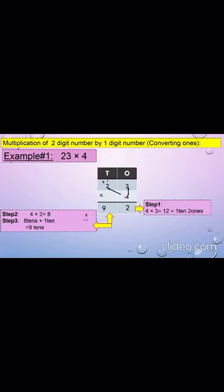Now we will multiply 4 and 2 in the next step. 4 multiplied by 2 equals to 8 tens, and we will add the carry over 1 ten to 8 tens, and the answer is 9 tens. So 9 will come in the tens column. The product of 23 and 4 is 92.